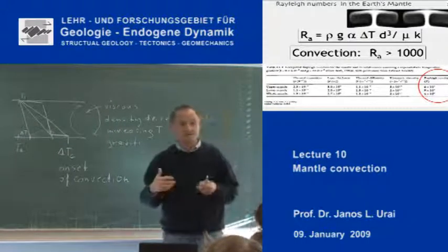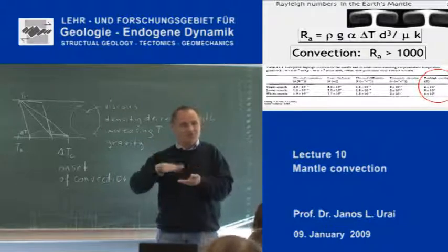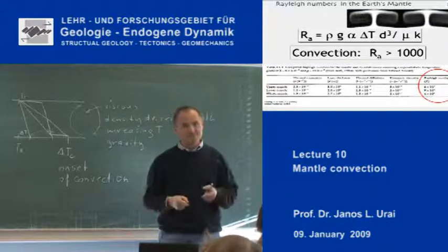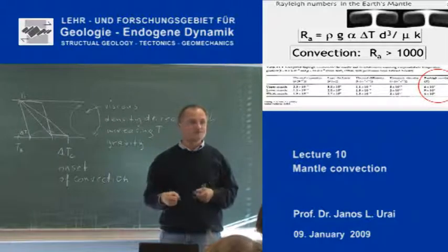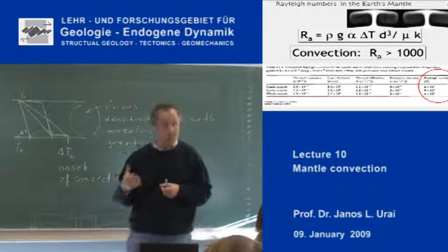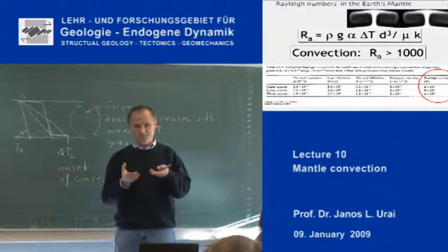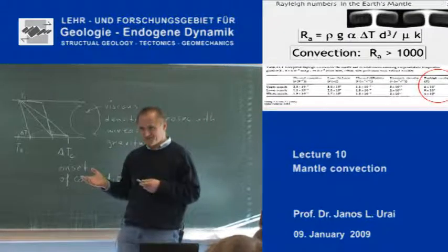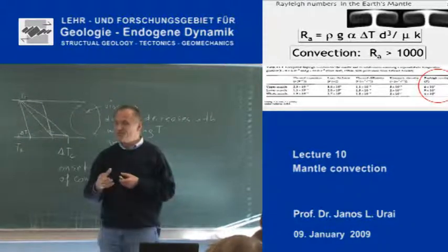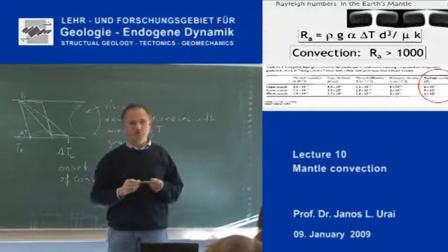So what is convection? Convection is an instability which spontaneously starts if the temperature gradient between the bottom and the top is too high. Then it will spontaneously arise and find the cells or the geometry of convection which is the most suitable for this kind of flow. And the reason why convection arises is because convection is a more efficient way to get rid of the heat.